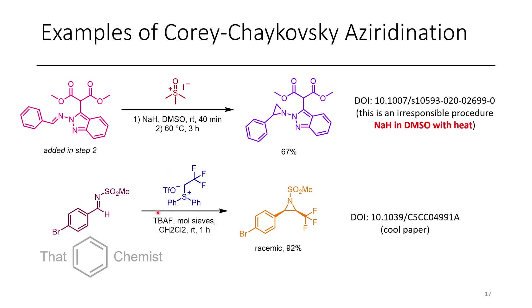In this next example, from a paper where they use a trifluoroethyl-derived sulfonium, what they do is make trifluoromethylated aziridines with good diastereoselectivity, although the products are racemic. This is a cool way to introduce CF₃ groups.